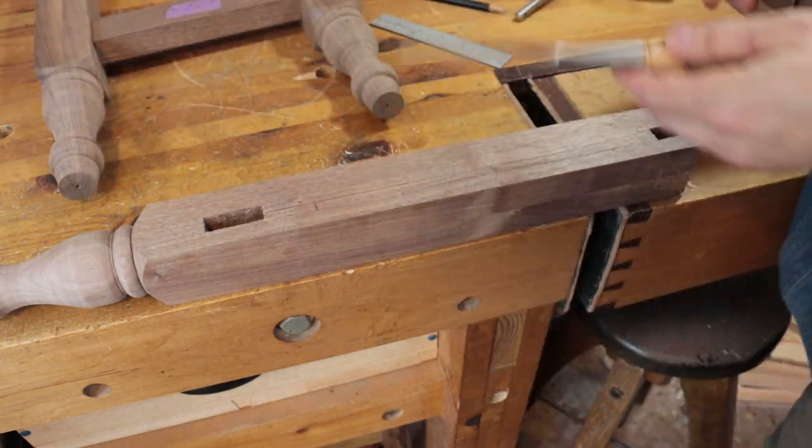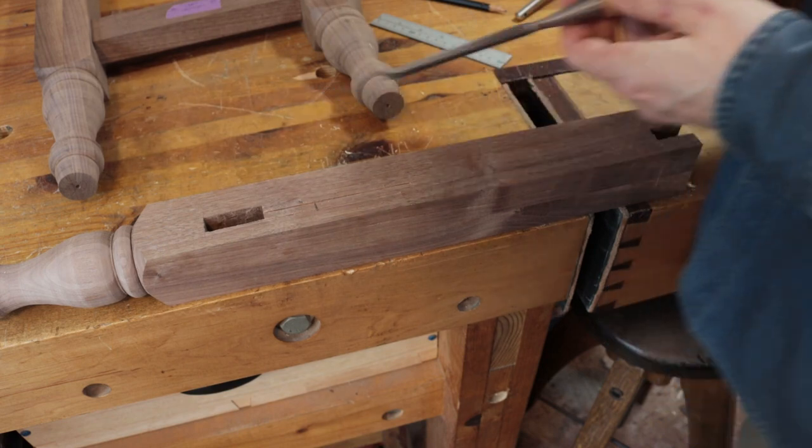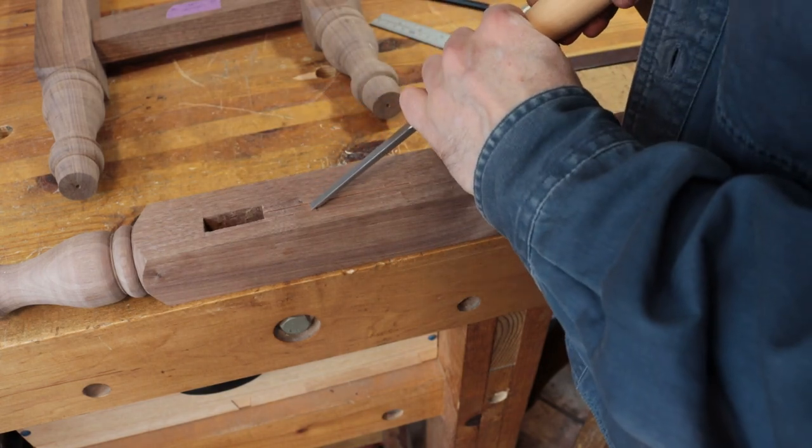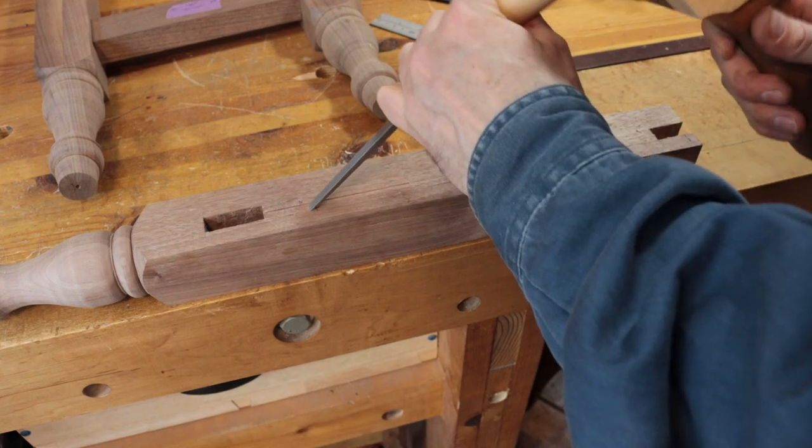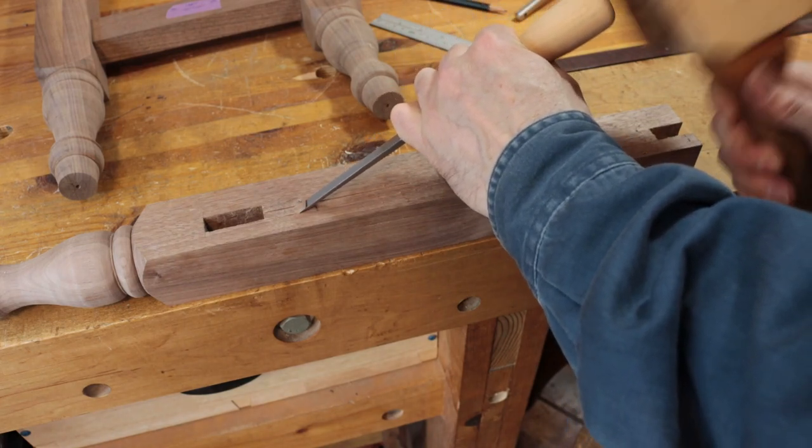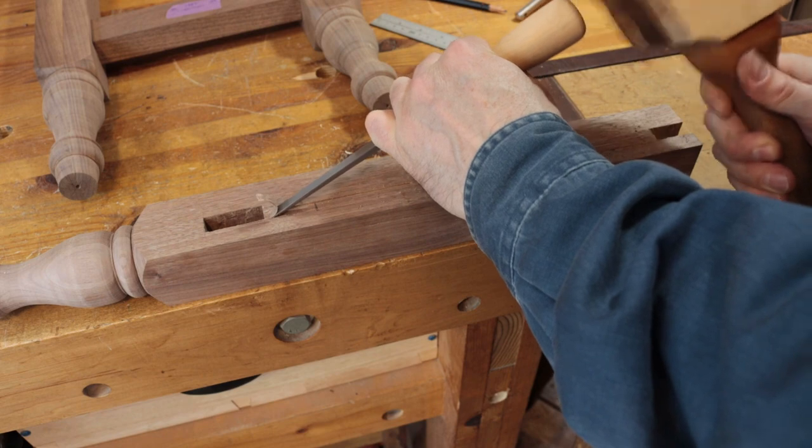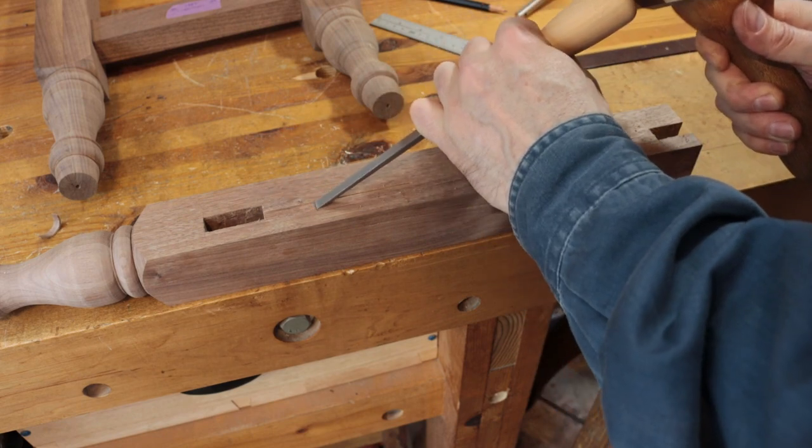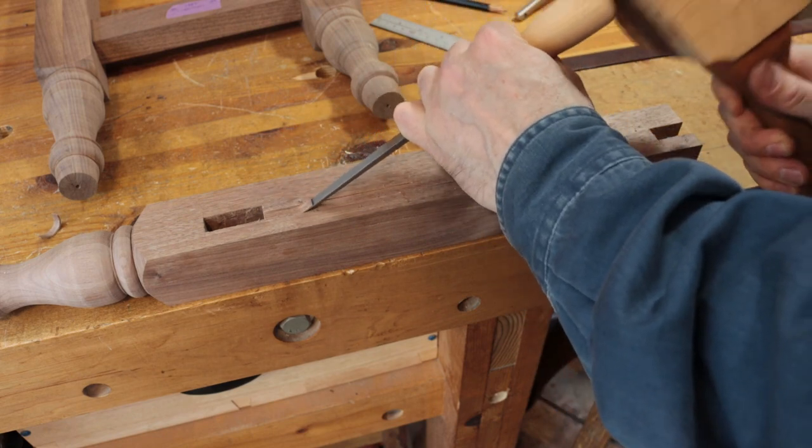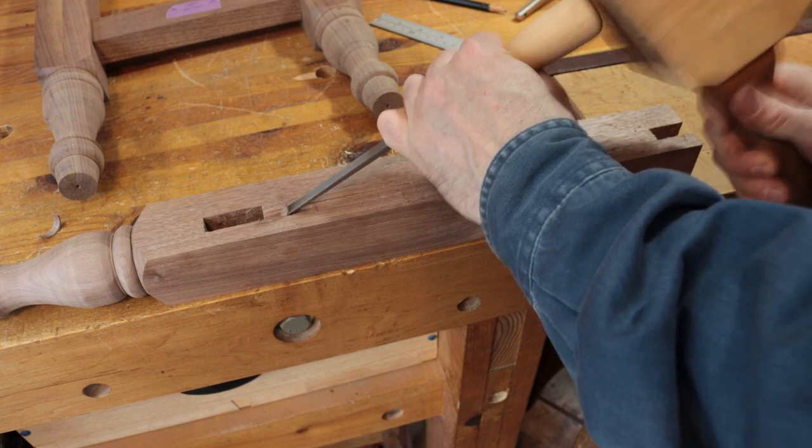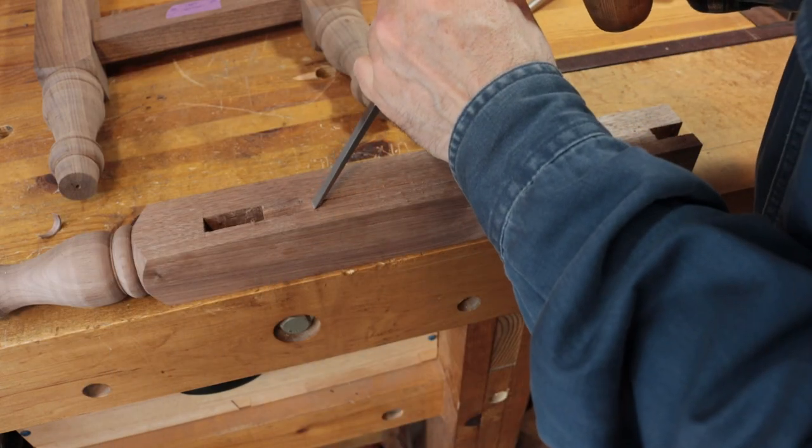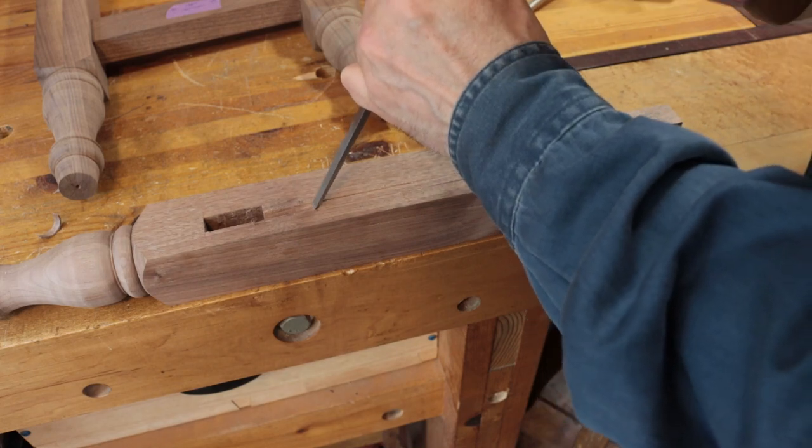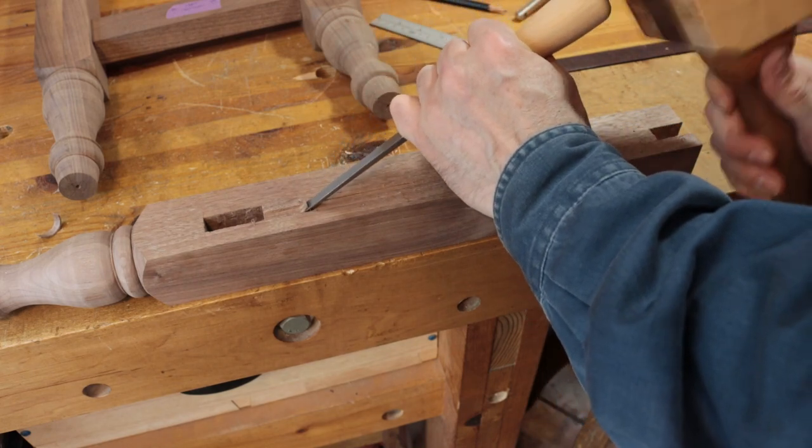Then I'm going to take a chisel which is the same width as the dado that I want to make, and I'm just going to cut right in and take that part off, go up to the pencil line. This dado is not going to be that deep, so I don't have to go that deep.